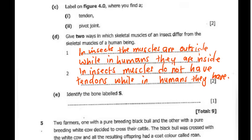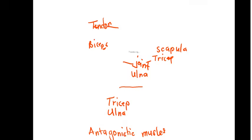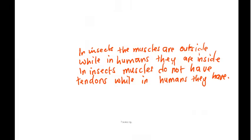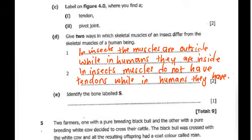Question 4E: identify the bone labeled S. The bone labeled S is the scapula, as we already mentioned. So we write scapula. That's all for question 4 from our biology paper 2, 2018 paper.